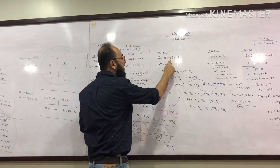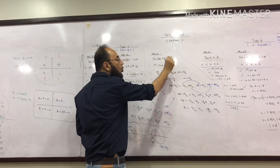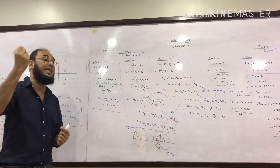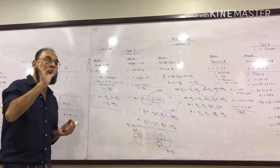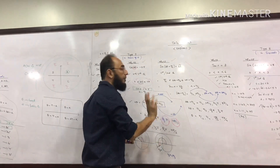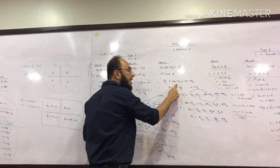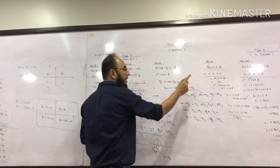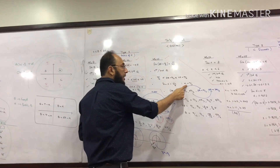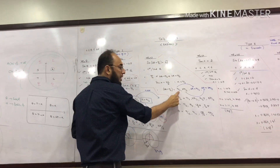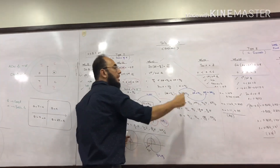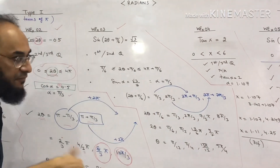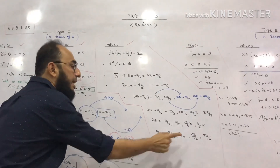Example 3: sin(2θ + pi/6) = √3/2. Since the ratio is positive and taken from a triangle, it's in the first and second quadrants. The range is modified accordingly, giving a modified range between pi/6 and 4pi plus pi/6. The basic angle comes out to be pi/3. Work through first quadrant, second quadrant, and two extra revolution answers, then make theta the subject for four final answers.